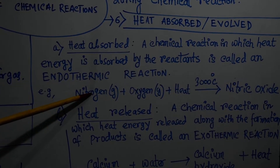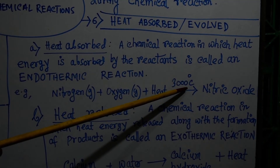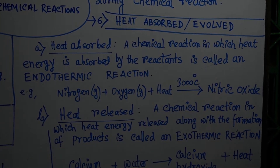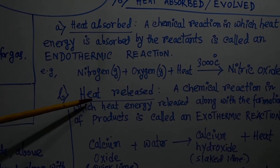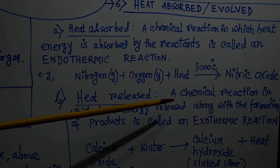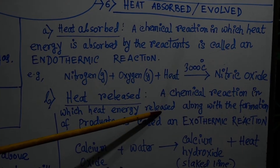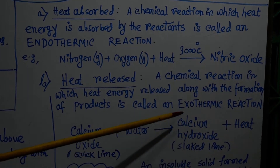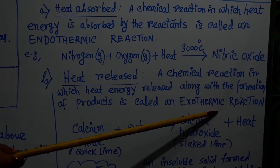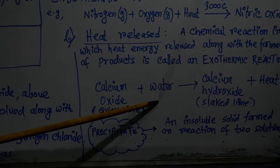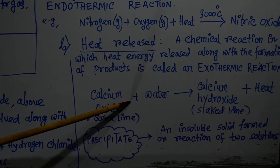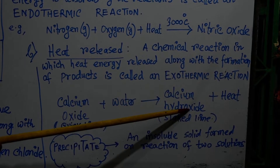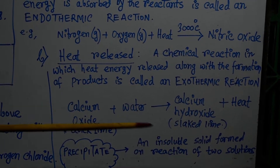For example, when nitrogen and oxygen gases are heated to a very high temperature of about 3000 degrees centigrade, nitric oxide is formed. A chemical reaction in which heat energy is released along with the formation of products is called an exothermic reaction. An exothermic reaction causes a rise in temperature. For example, when water is added to calcium oxide, a large amount of heat energy is released along with the formation of calcium hydroxide, which boils the water.